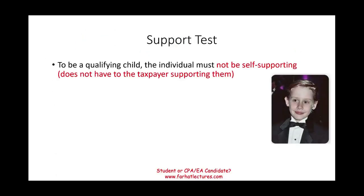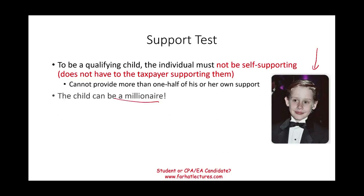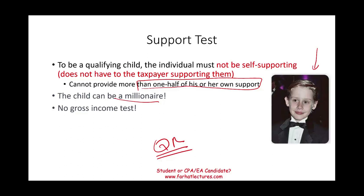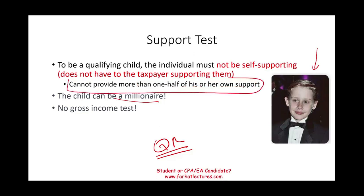Now the support test: to be a qualifying child, the individual must not be self-supporting. The child cannot provide more than half of his or her own support. Think about Macaulay Culkin — a child can be a millionaire, as long as they don't spend more than half of their own support. They could earn money and put it in a bank account or trust account. There is no gross income test for the qualifying child — that distinction is important.